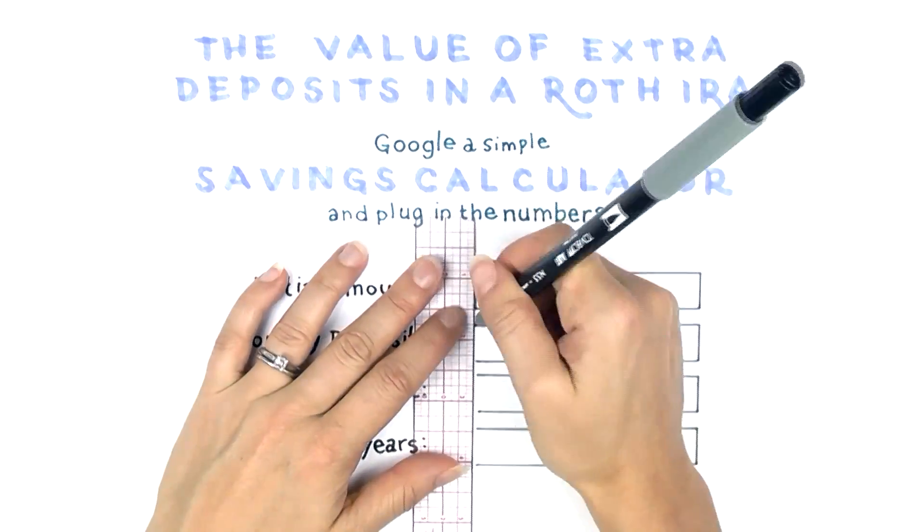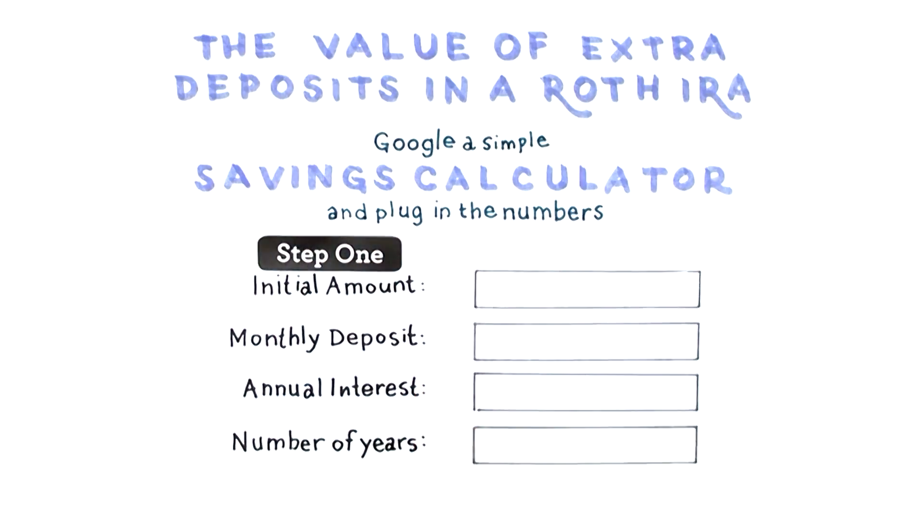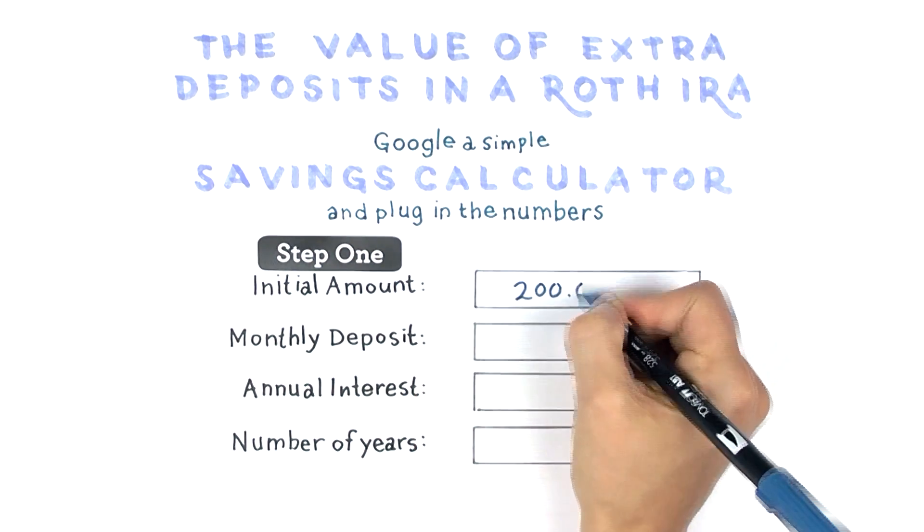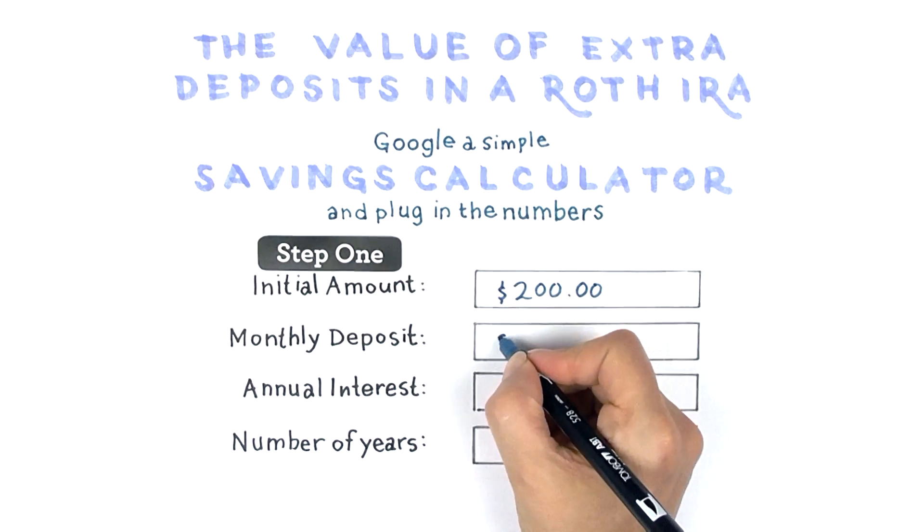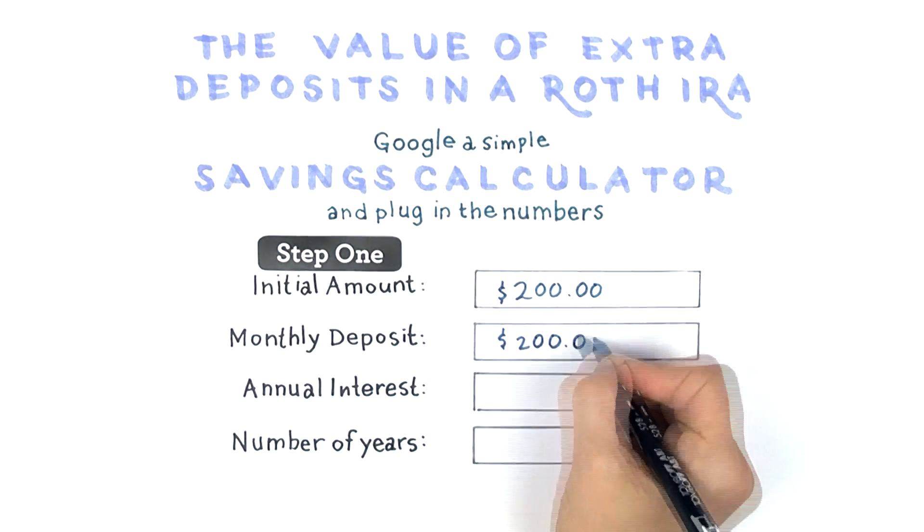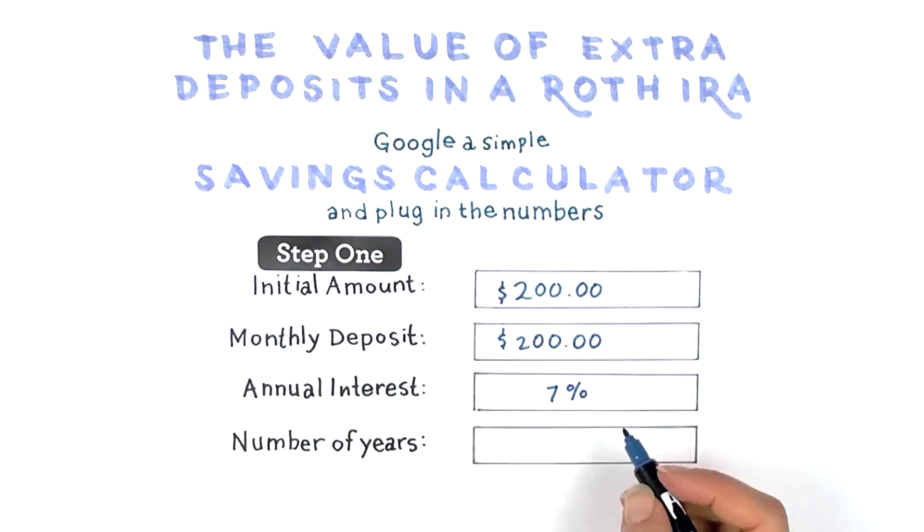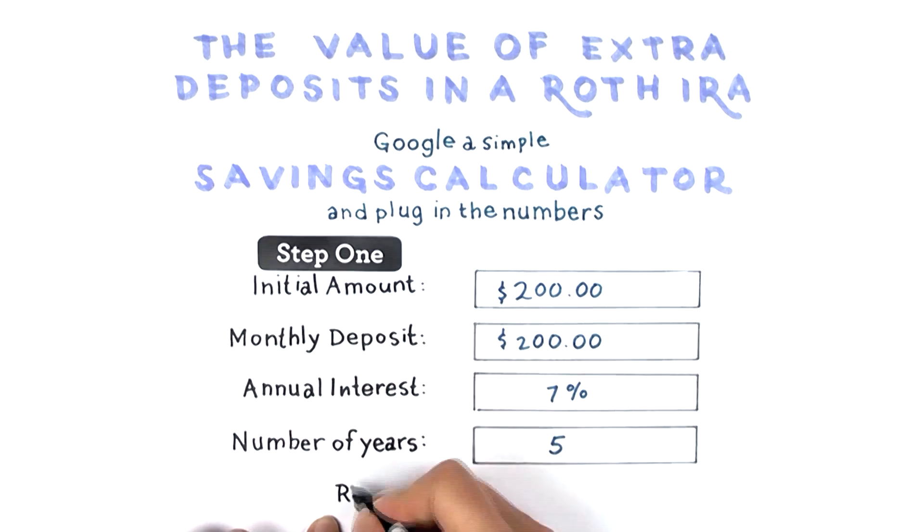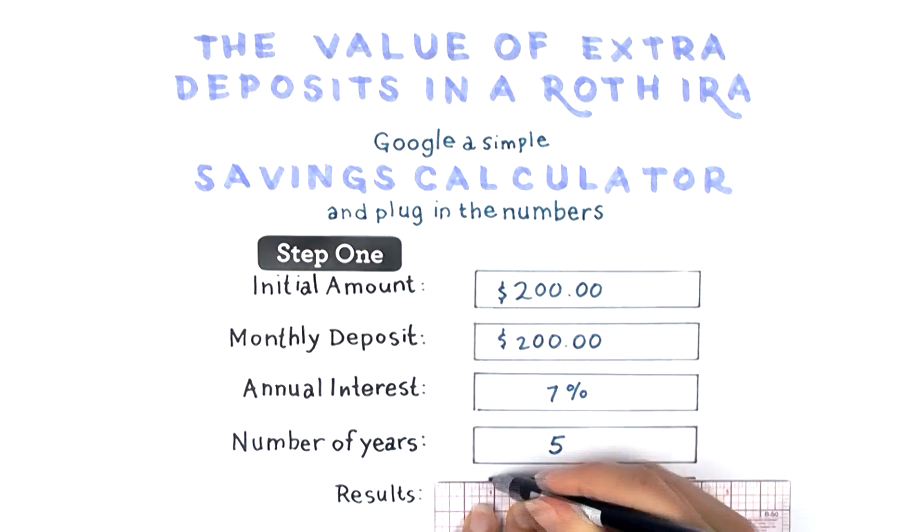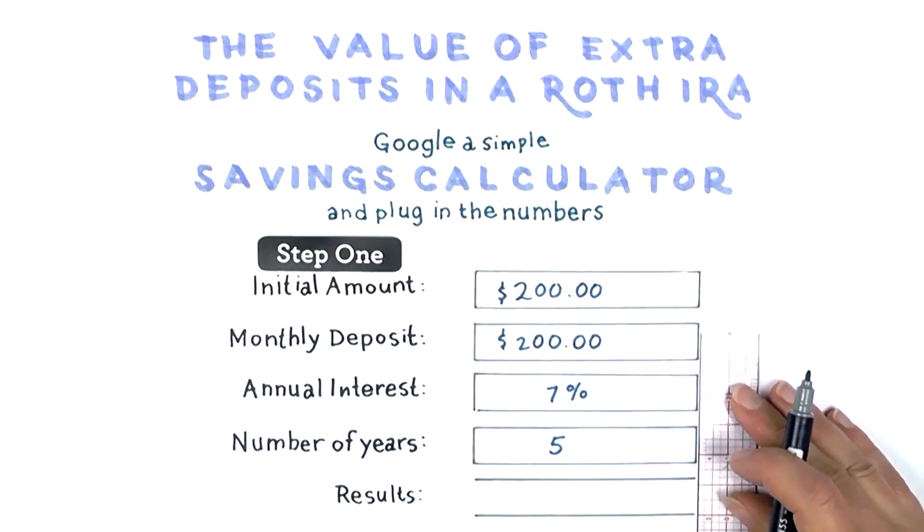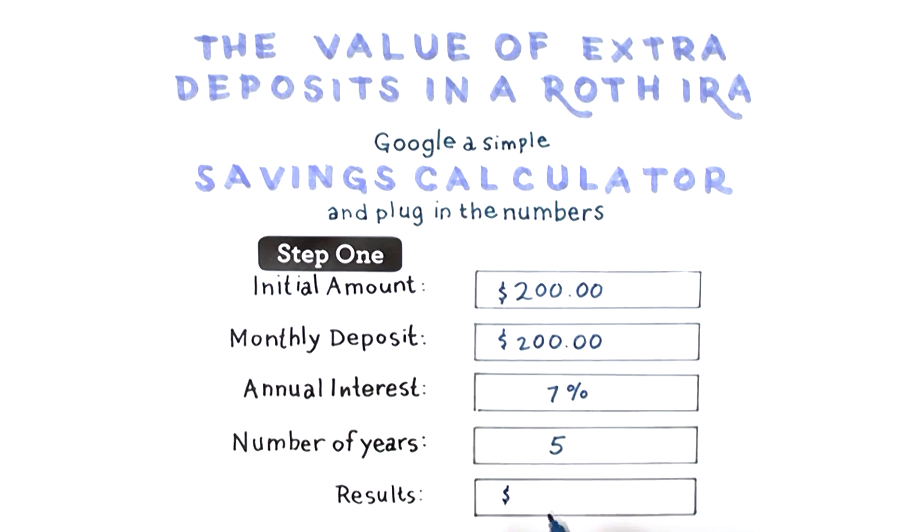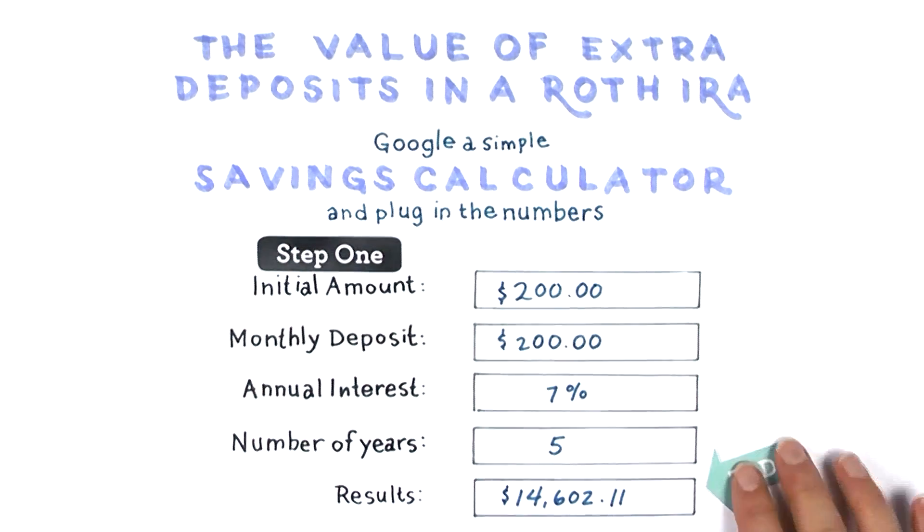This is a two-step process. For the first part, let's plug in $200 as principal, $200 per month deposit, with 7% annual growth over the course of five years. This represents the additional rent we pay over the life of the lease. At the end of five years, if instead we decided to save for retirement, we'd likely have $14,602.11. Not bad!